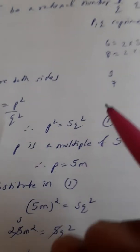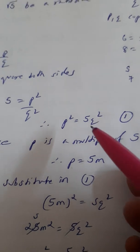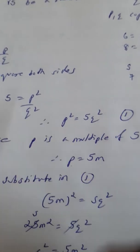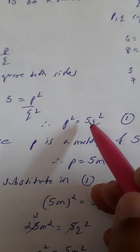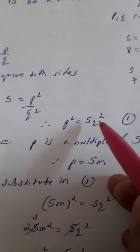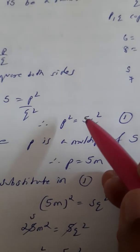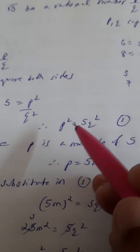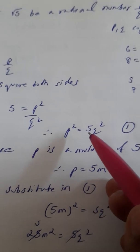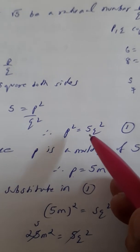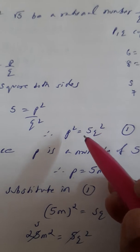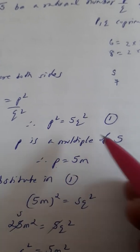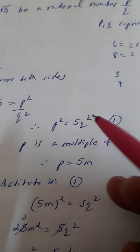So here we get an important conclusion that p square is 5q square. And yesterday we did some questions where I said that this number is very significant—5. Because 5 into anything, whatever is the value of q, it will always be a multiple of 5. So the square of a number is a multiple of 5, which means the number is also a multiple of 5. So this is important: p is a multiple of 5.